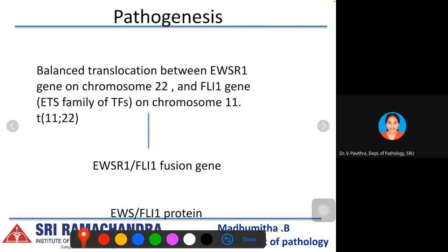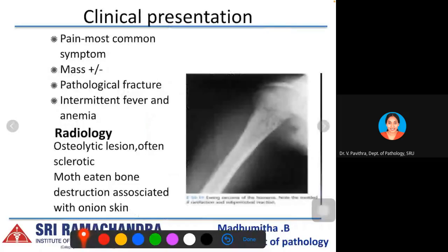The pathogenesis involves a balanced translocation between the EWSR1 gene on chromosome 22 and the FLI1 gene on chromosome 11, producing the t(11;22) translocation and EWSR1-FLI1 fusion gene encoding the EWSR-FLI1 protein. Clinically, patients typically present with pain as the most common symptom. A mass may or may not be present; pathological fracture, intermittent fever, and anemia may also occur.